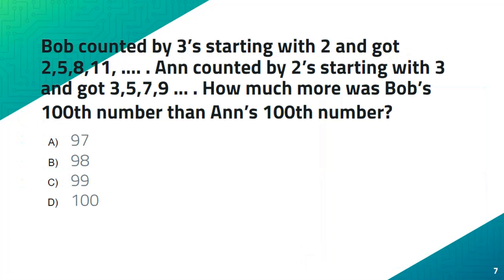I want you guys to try these questions. The first question is: Bob counted by 3's starting with 2 and got 2, 5, 8, 11, and so on. Ann counted by 2's starting with 3 and got 3, 5, 7, 9, and so on. How much more was Bob's 100th number than Ann's 100th number? A) 97, B) 98, C) 99, D) 100. Put your answers in the comments below.